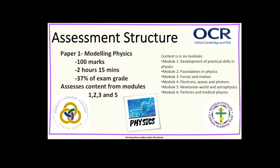The assessment structure of the course is that Paper 1 is a modelling physics paper. This is out of 100 marks, you have 2 hours 15 minutes. 37% of your exam grade comes from this paper. This paper assesses content from modules 1, 2, 3 and 5. The outline of modules are on the right hand side.